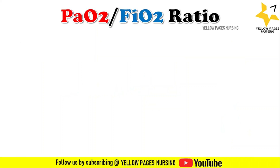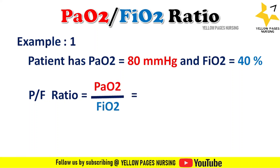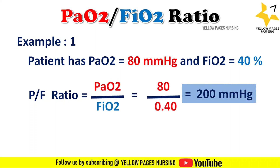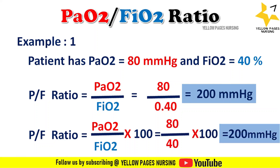For example, a patient has a partial pressure of oxygen of 80 mmHg and FiO₂ of 40%. Method one: PF ratio = 80 ÷ 0.40 = 200 mmHg. Method two: PF ratio = (80 ÷ 40) × 100 = 200 mmHg. The only difference is that in method one, the FiO₂ percentage is converted to decimal (0.40) in the denominator.